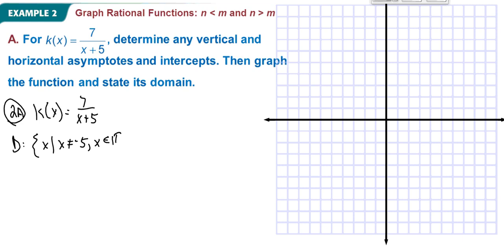If I set x plus 5 equals 0, it gives x equals negative 5. So x does not equal negative 5, and x is an element of the real numbers — written in set builder notation. We can also write it in interval notation. Since I just found this undefined value, I'll also look at vertical asymptotes right away. There's going to be one at x equals negative 5, which is our vertical asymptote.